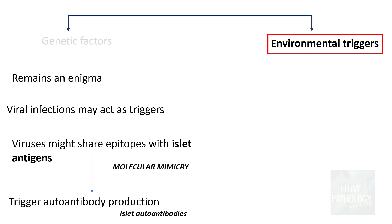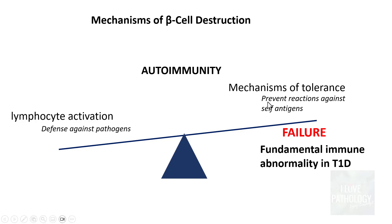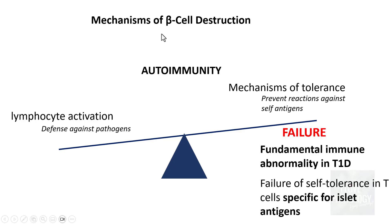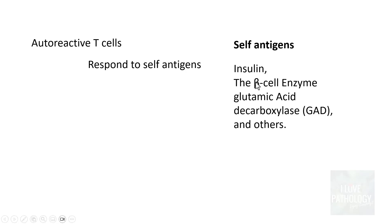These are the environmental triggers associated with type 1 diabetes mellitus. The fundamental defect in beta cell destruction is the failure to prevent reaction against self-antigens — that is, failure of self-tolerance in T-cells specific for islet antigens. There can be auto-reactive T-cells that respond to self-antigens. The self-antigens in relation to type 1 diabetes mellitus are insulin and the beta cell enzyme glutamic acid decarboxylase, along with various other antigenic components.